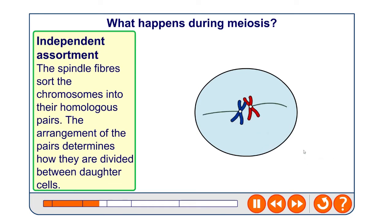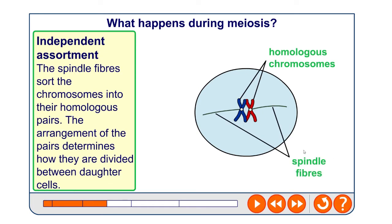This is where meiosis one differs significantly from mitosis. It's called independent assortment. The spindle fibers sort the chromosomes into their homologous pairs, and the arrangement of those pairs determines how they ultimately get divided between daughter cells. The homologous chromosomes line up along the middle of the cell together, rather than being lined up completely independently ready to be separated into chromatids — that's one of the key differences between mitosis and meiosis.